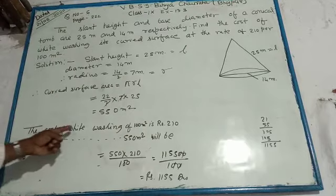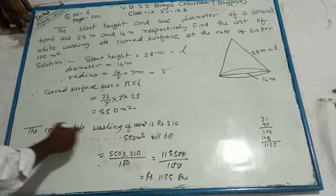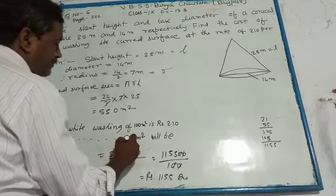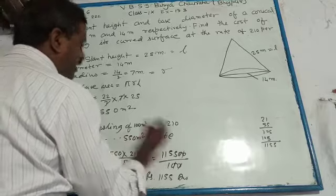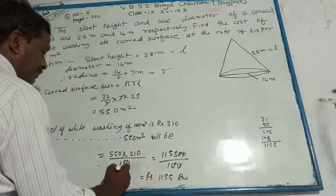The cost of whitewashing 100 meter square will be Rs 210. The cost of whitewashing 550 meter square will be 550 times 210 divided by 100, equals Rs 1155.